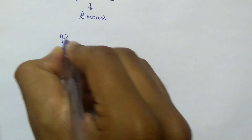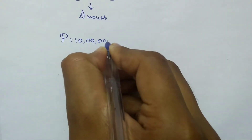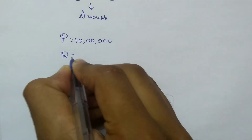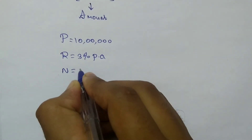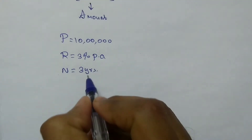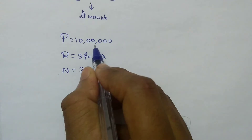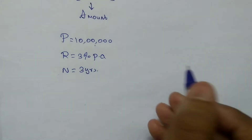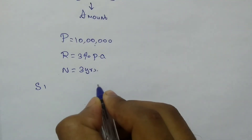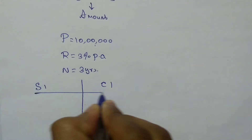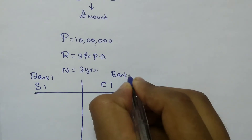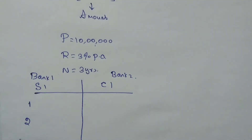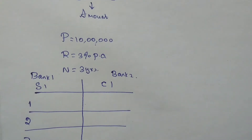Assume you are taking a loan of 10 lakh rupees from two different banks at a rate of interest of 3% per annum. Every year you have to pay 3%, and the number of years to settle the interest is three years. At the end of three years you have to settle the 10 lakh principal as well as pay 3% per annum each year. Bank One provides simple interest and Bank Two provides compound interest.